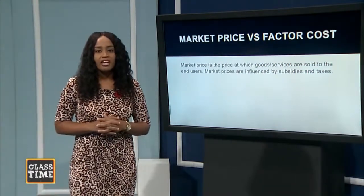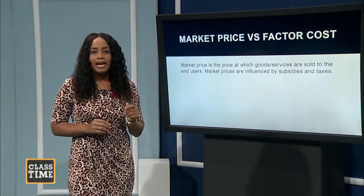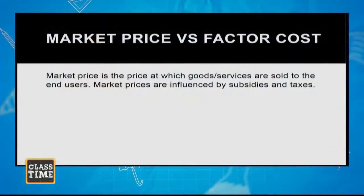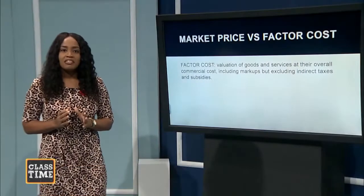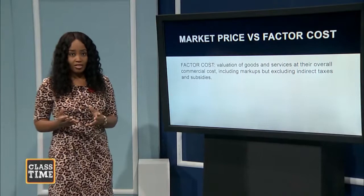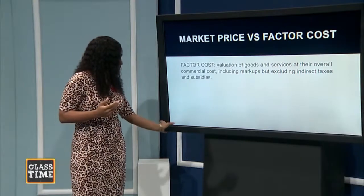Two more important concepts to know are market price and factor costs. When looking at GDP and other national income statistics, you will see questions asking you to calculate at market price or at factor cost. Market price looks at the price of the good or service to the end user or consumer. Factor cost, on the other hand, looks at the cost at the point of production, so it is not influenced by subsidies and taxes.